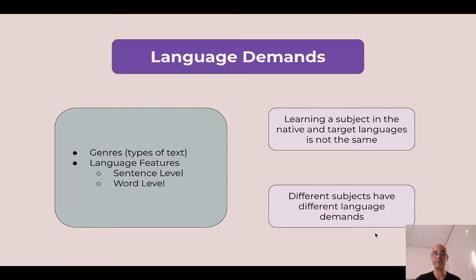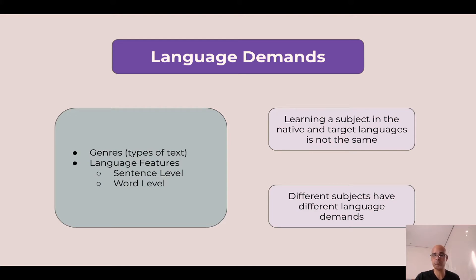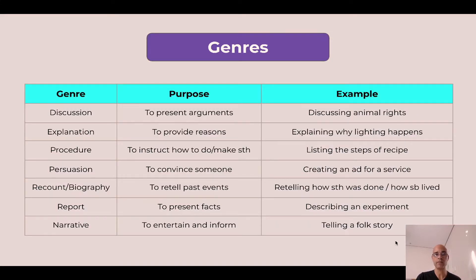Also, different subjects have different language demands. One genre that may be activated a lot in a math class may not be activated in a science, geography, or economics class. One specific language feature that I need for art may not be as needed for geography, PE, or another type of subject. So let's jump straight into genres and language features and see what they have.